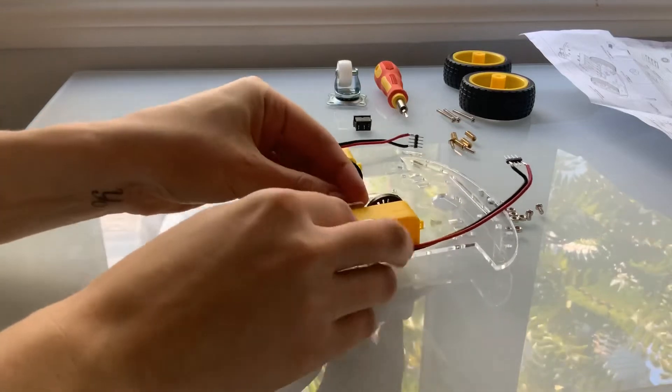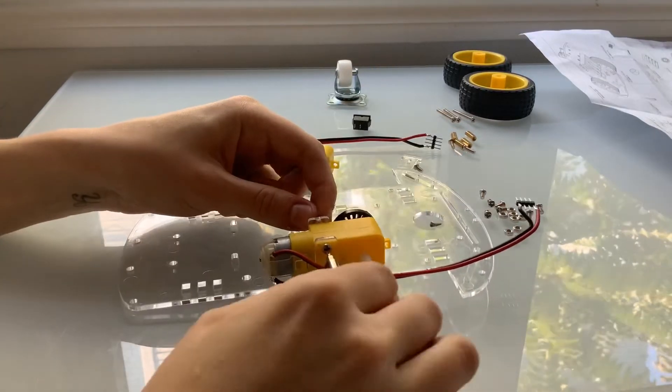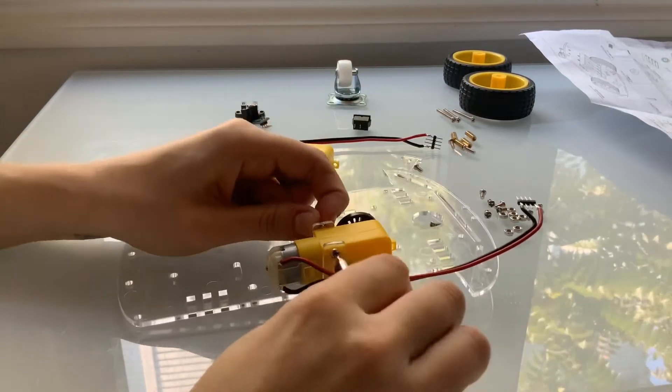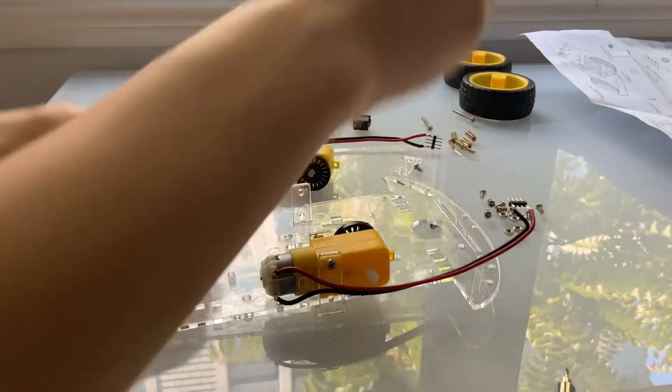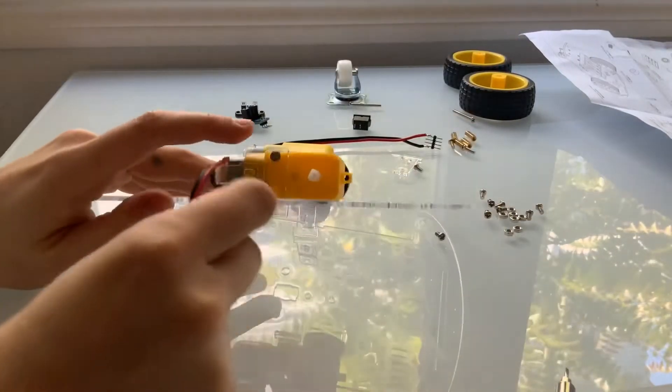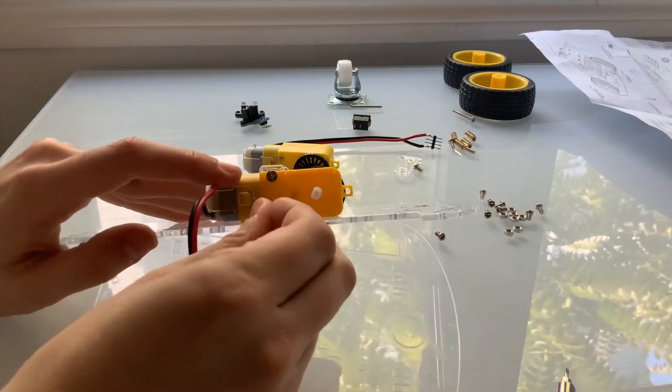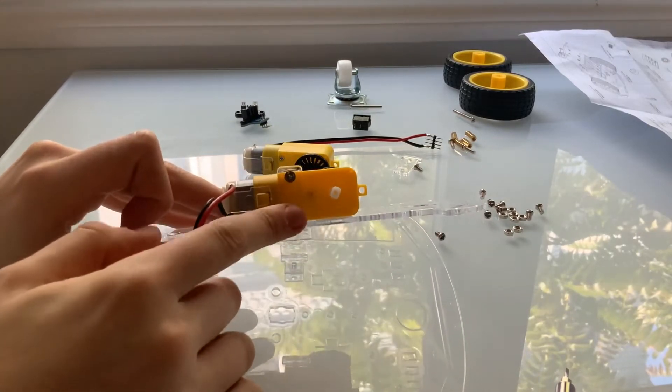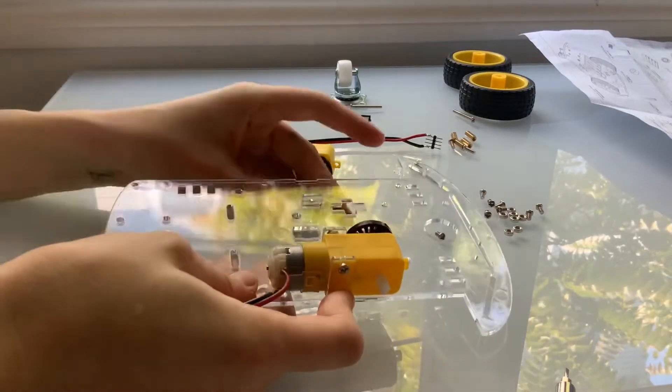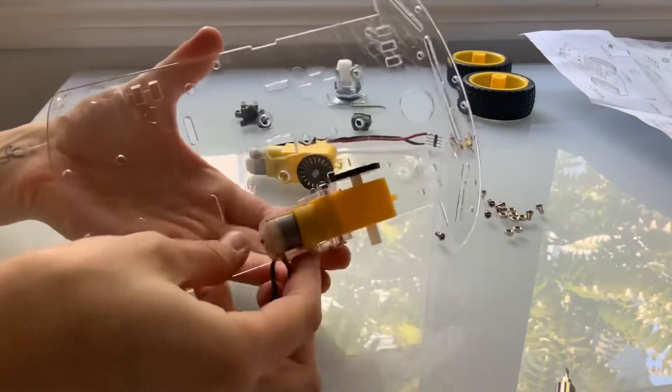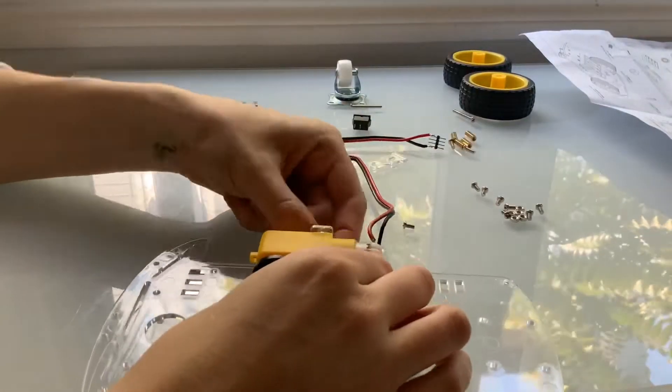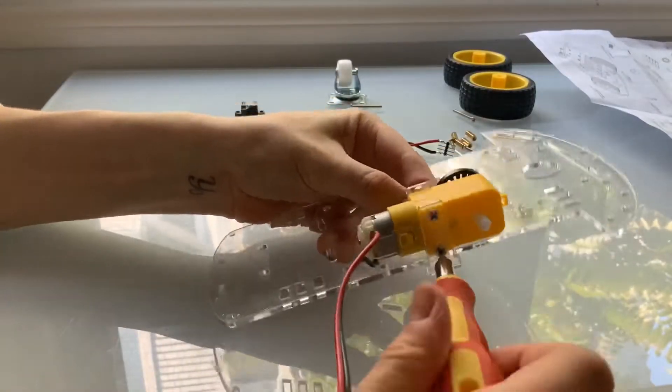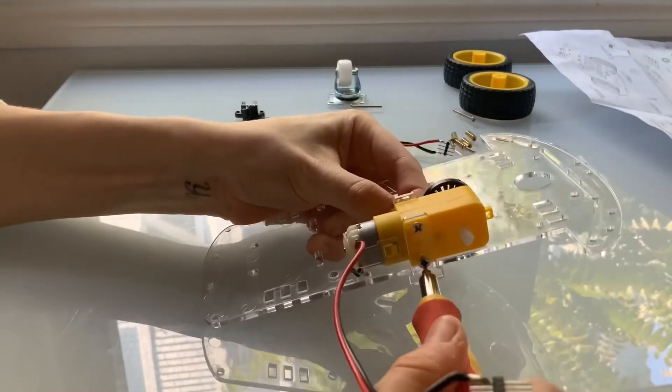Then take another long screw and put it through the hole in the bottom of the fastener. It should go through both fasteners and the motor yet again. Take another nut and attach it on the other side. Now you can tighten up both screws and then repeat that entire process on the other side of the car.